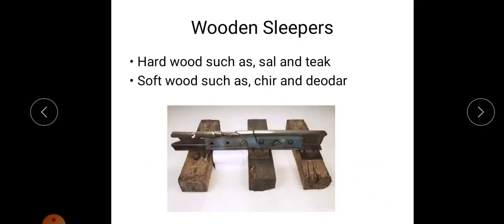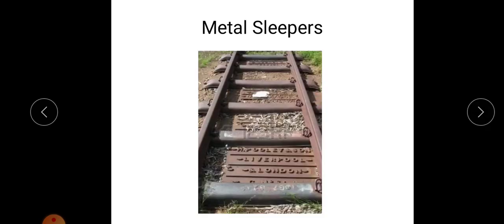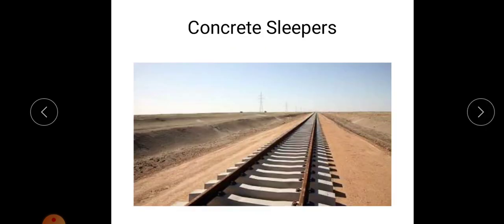So these are the wooden sleepers. And for that we are using hardwood and softwood. Example of hardwood: sal and teak. And softwood: deodar. These are known as wooden sleepers. In olden days we were using wooden sleepers. Nowadays we are not using these wooden sleepers. These are the metal sleepers. You may be seeing. And these are the concrete sleepers.